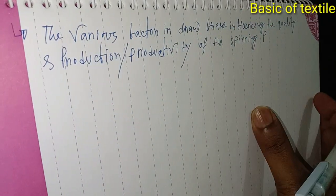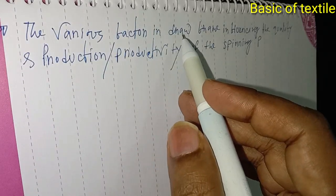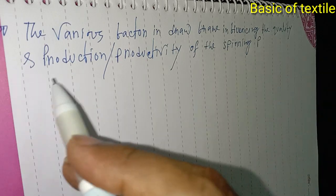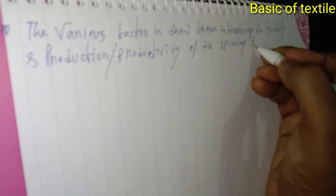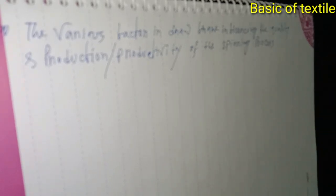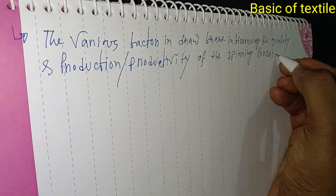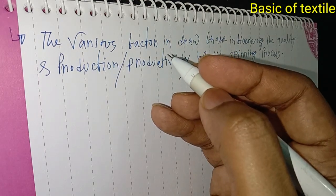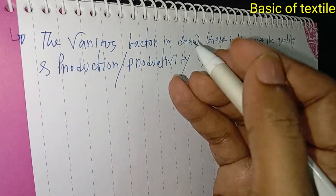Today we discuss the various factors influencing the quality and productivity of the spinning process at the draw frame machine.